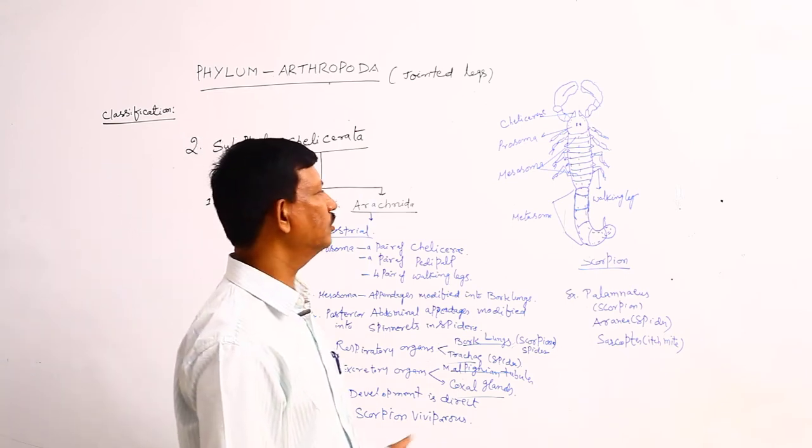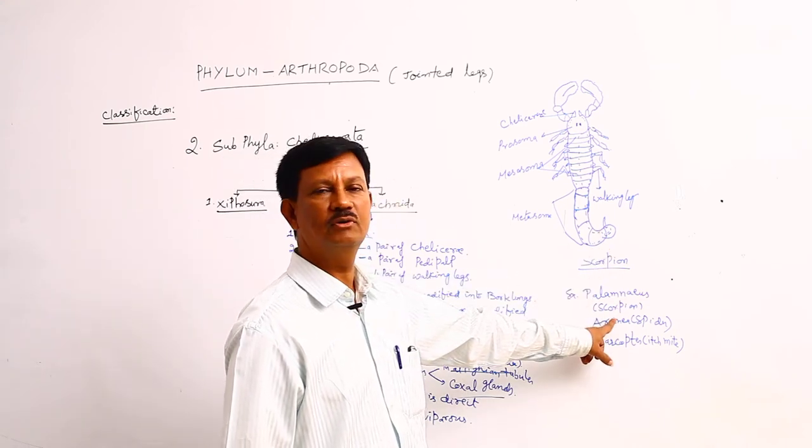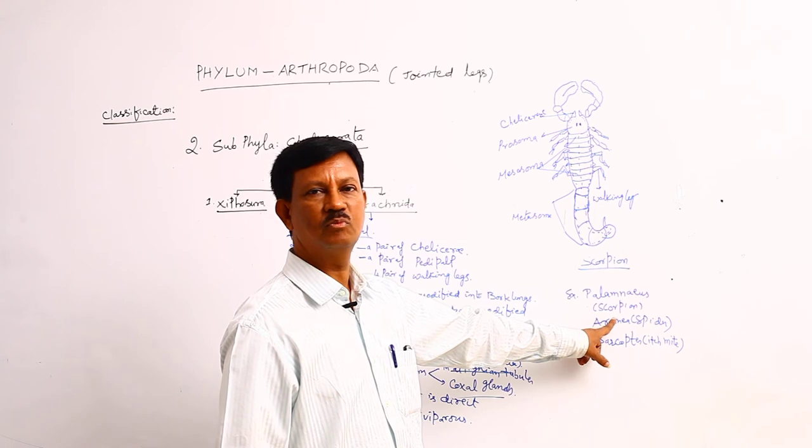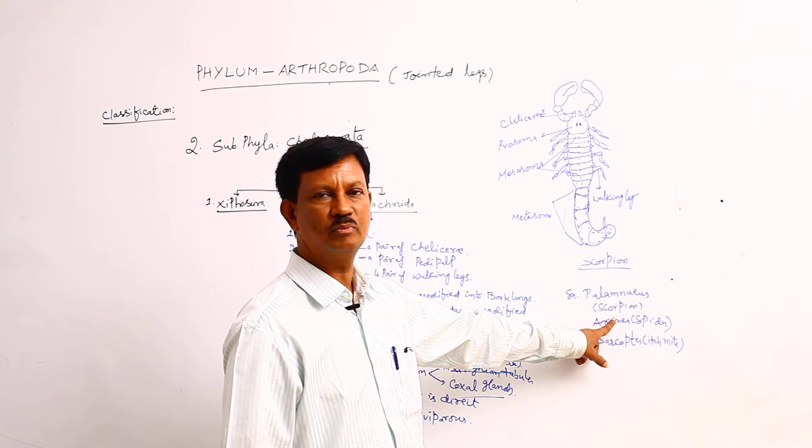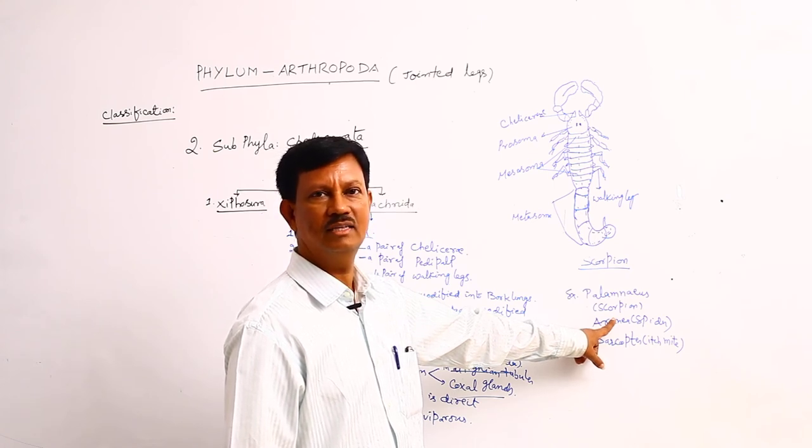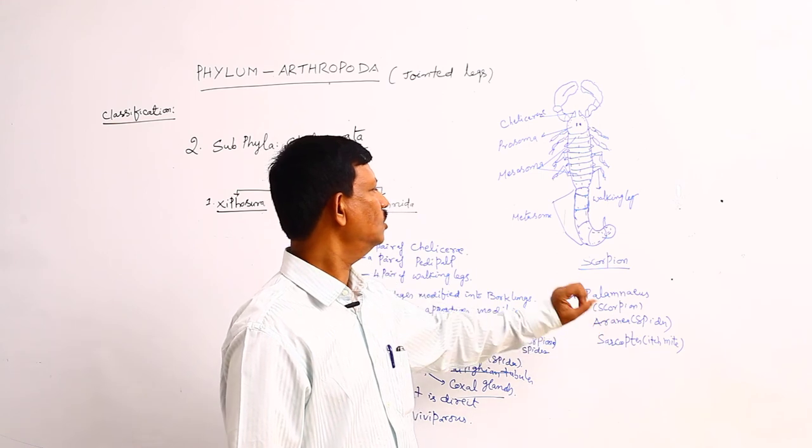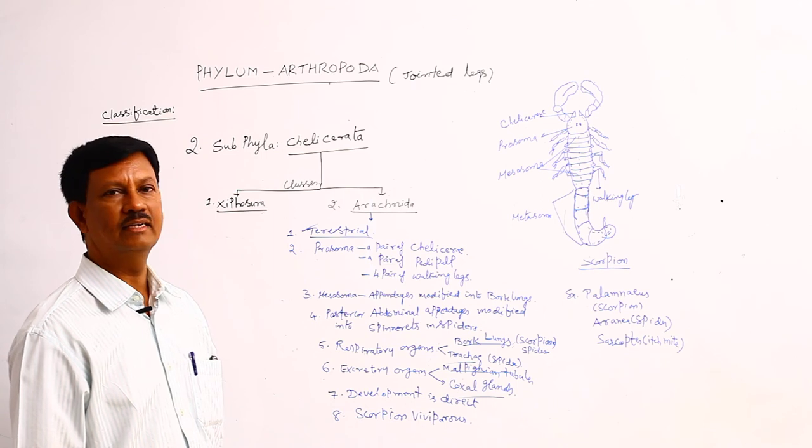For example, in some animals, poisonous glands are also present here. Example is the scorpion. They produce some chemical substance which is poisonous. That is useful for protection. If any enemy comes near to the scorpion, they inject the poisonous fluid into the body of the organism. They paralyze it. That is the protective method. These are the main characters of the class Arachnida.